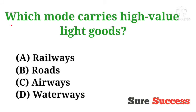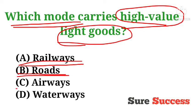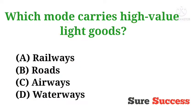Which mode carries high-value light goods? That is, which mode carries goods of lightweight and high value? Options are railways, routes, airways, and waterways. The correct answer is airways.